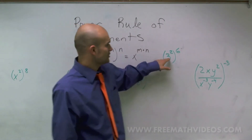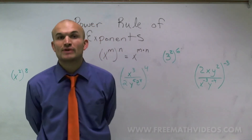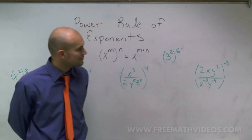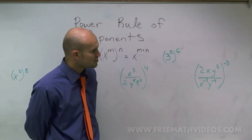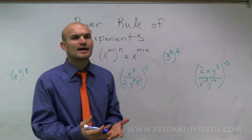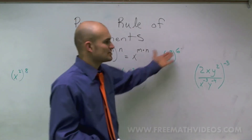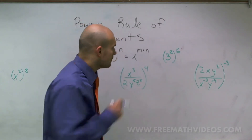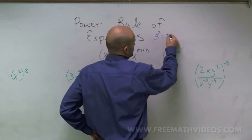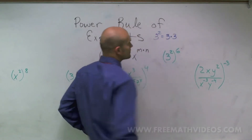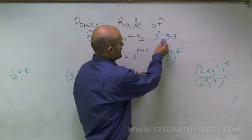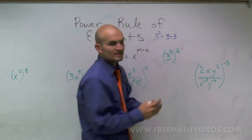Let's take a look at an example. Let's say I have the number 3 raised to the second power — we know that answer is 9. But what happens when you have 3 squared, and then it's raised to the sixth power? What exactly does that mean? Well, we know that 3 squared equals 3 times 3, and now I'm taking this number and multiplying it by itself six times.